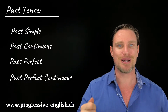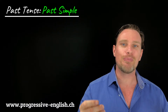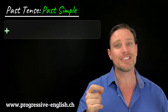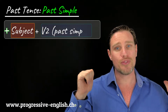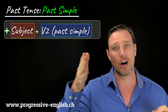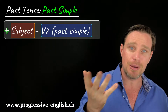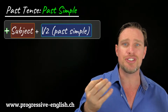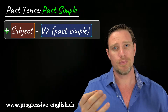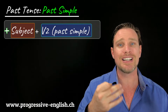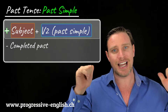The first one: past simple. We form past simple with the subject plus the past simple form of the verb — the second column. The subject is just who or what does the verb, and we use past simple for a completed past action.